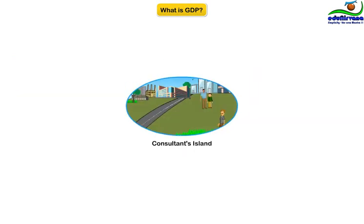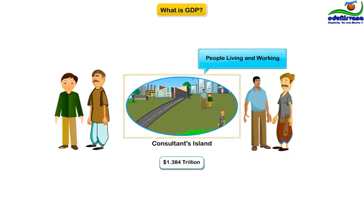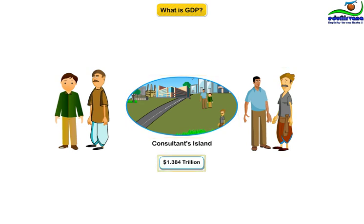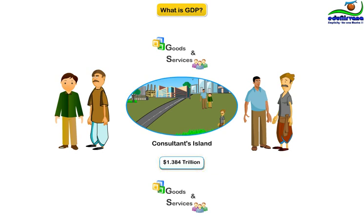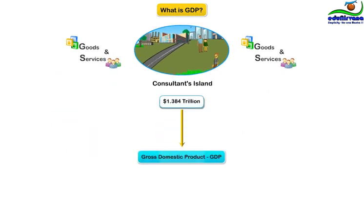Let us see more in detail about this number. Last year, it was $1.384 trillion. In other words, last year, people living and working in our island produced $1.384 trillion worth of goods and services. That dollar amount — $1.384 trillion — is what we call the gross domestic product.